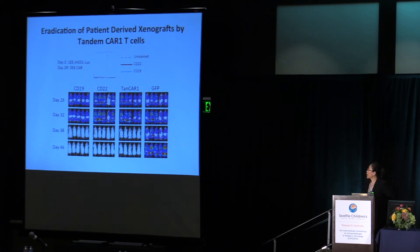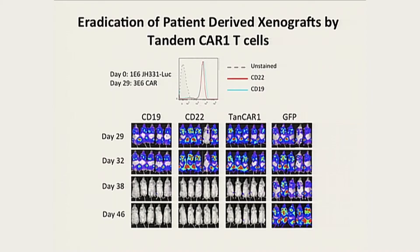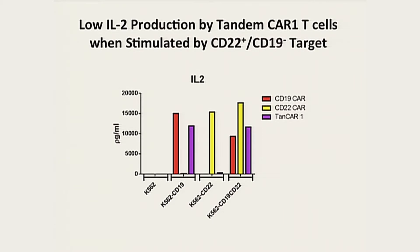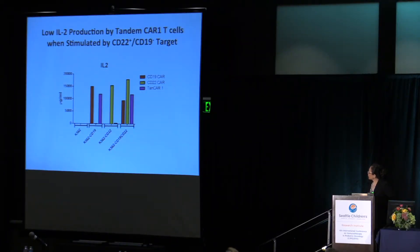We then used a more clinically relevant cell line — a slower-progression patient-derived xenograft line, GH331, which expresses both CD19 and CD22. TanCAR1 can completely eradicate the leukemia in vivo. However, IL-2 is considered a reliable marker of CAR T cell function, and TanCAR1 produced only a minimal amount of IL-2 when co-incubated with CD22-expressing K562 cells. So we decided TanCAR1 was not a good candidate for dual targeting of both CD19 and CD22.